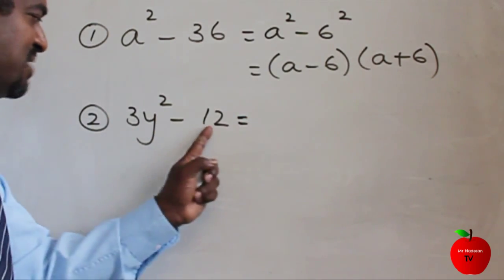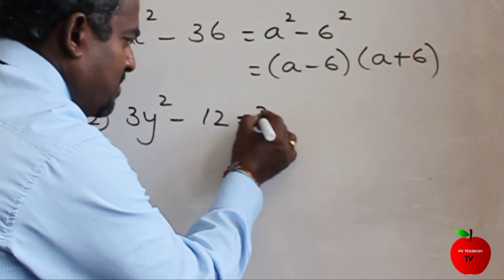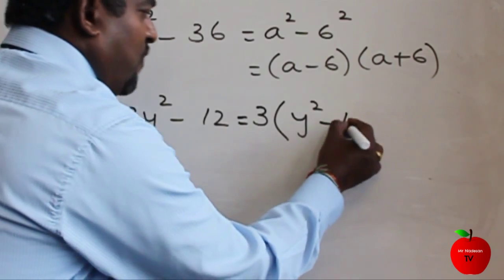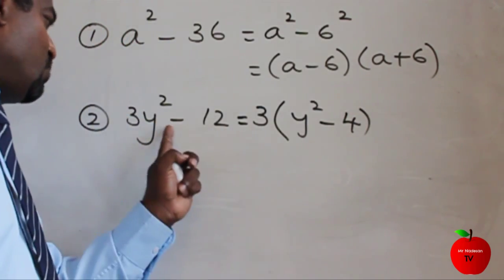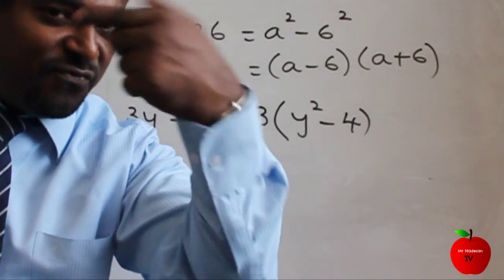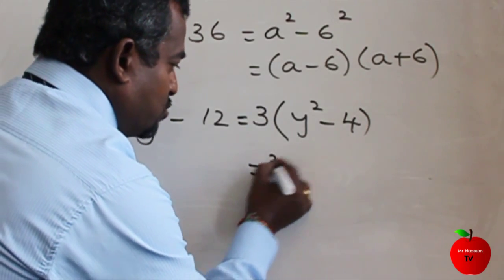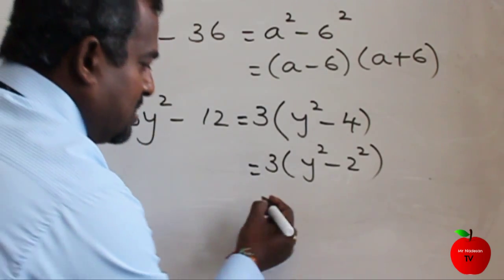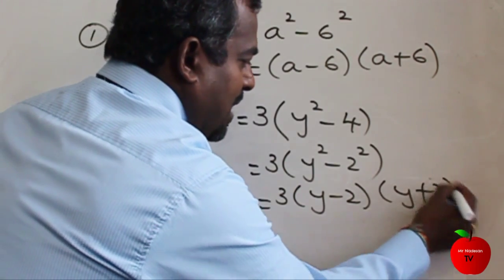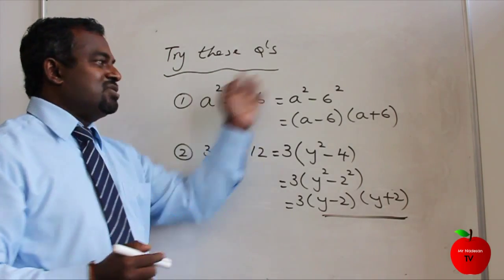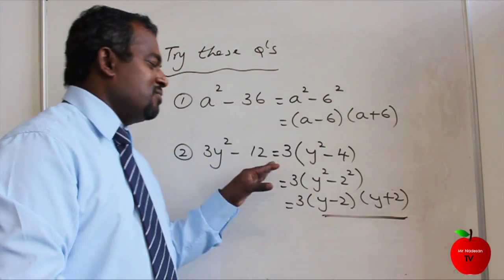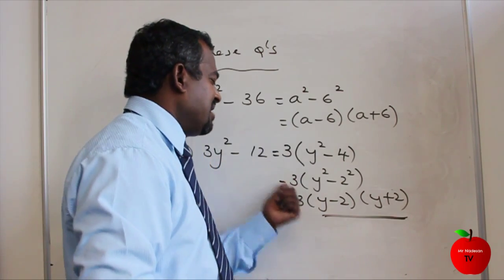For 3y squared minus 12: the highest common factor of 3 and 12 is 3. Taking 3 out gives 3 times y squared minus 4. Double-check: 3 times 4 equals 12, so that's correct. Now factorise further — y squared minus 4 is y squared minus 2 squared, so the final answer is 3 times y minus 2 times y plus 2. That's the C to B grade move — simple once you spot the highest common factor.